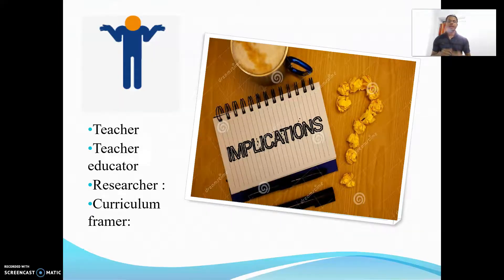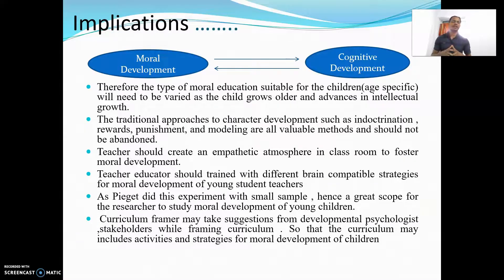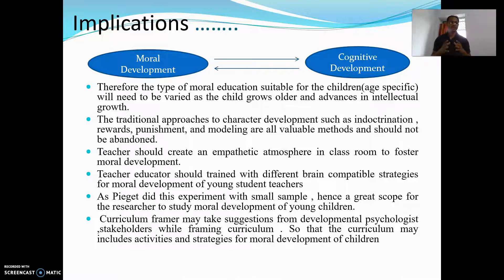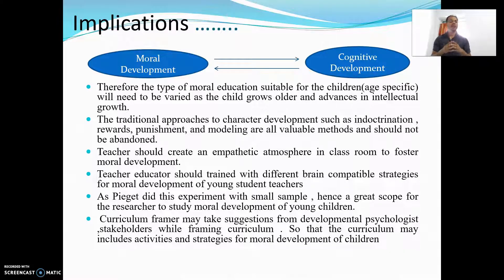From an implication point of view, this theory is applicable for teachers, educators, researchers, and curriculum frameworks. Since moral development and cognitive development are both very much related and cannot be separated, the type of moral education suitable for children is age-specific and needs to vary as a child grows older and advances in intellectual growth. The traditional approach — punishment, reward, and modeling — all have value and should not be abandoned, as they contribute to moral development. Teachers should create an empathetic atmosphere in the classroom to foster moral development.